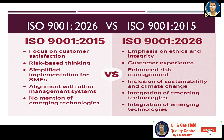Let us look at the vision of ISO 9001:2015 and ISO 9001:2026 side by side. The 2015 edition focused on customer satisfaction, risk-based thinking, simplified implementation for SMEs, and alignment with other management systems, with no mention of emerging technologies. Whereas the 2026 edition might emphasize ethics and integrity, customer experience, enhanced risk management, inclusion of sustainability and climate change, and integration of emerging technologies — which is the main highlight of ISO 9001:2026.